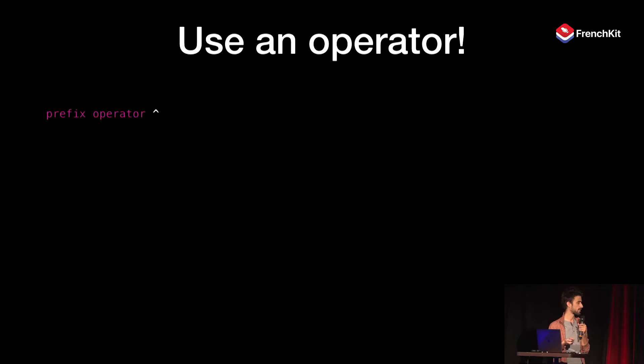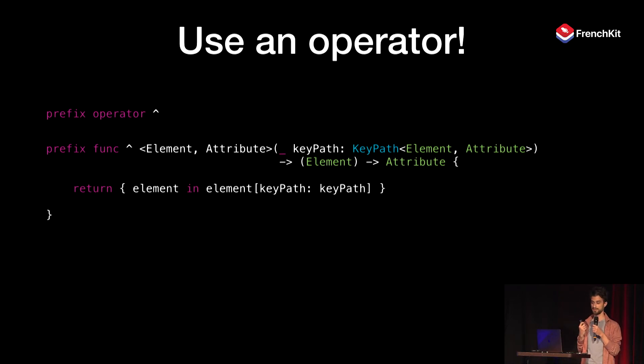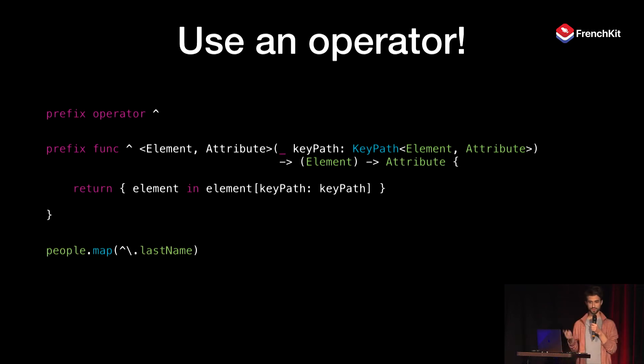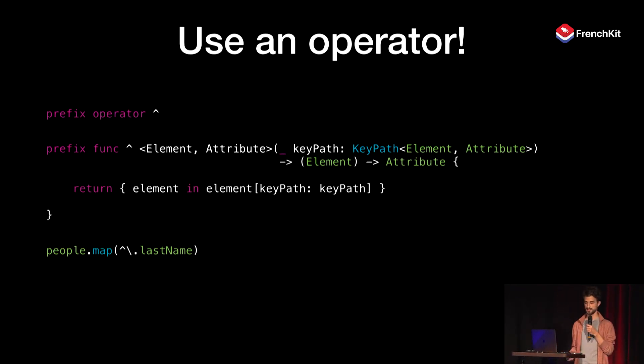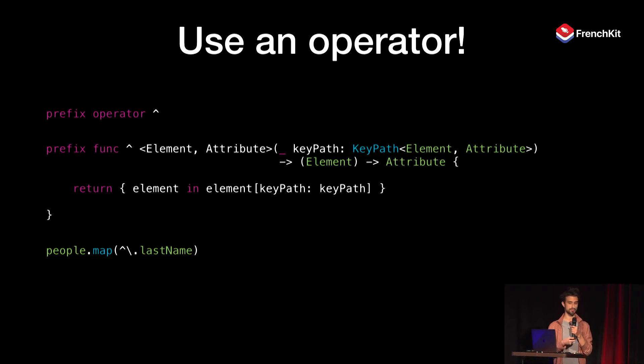If you don't want to write all those wrapper functions, you don't have to. For instance, you can write a prefix operator that takes a key path and turns it into a closure. The process is simple: we return a function that accesses the attribute via the key path. Then wherever the code expects a closure, we can just pass a key path with the operator to transform it — and we have much shorter code. Of course, if you don't like custom operators, you can also use a global function named something like `to`, and it will work the same way.